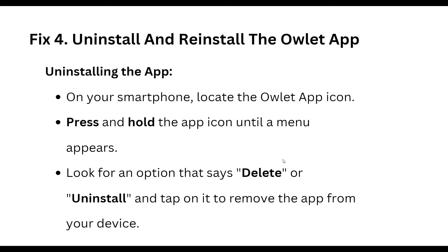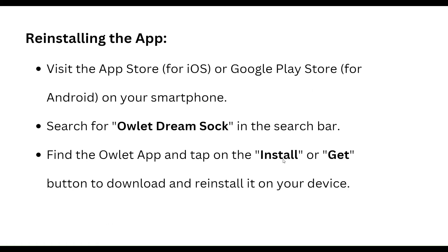The fourth step is to uninstall and reinstall the Owlet app. To uninstall, locate the Owlet app icon on your smartphone, press and hold the app icon until a menu appears, look for the option that says delete or uninstall, and tap it to remove the app from your device.